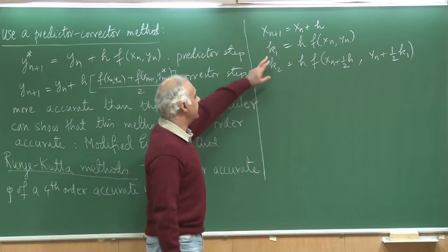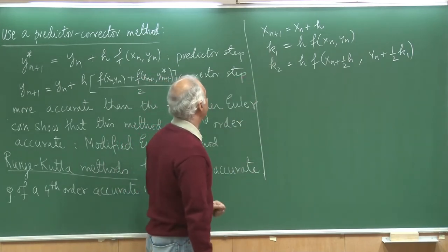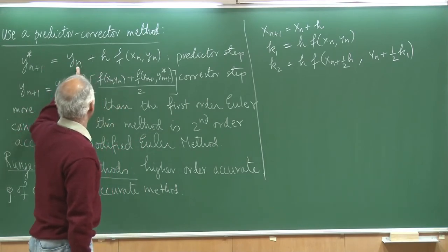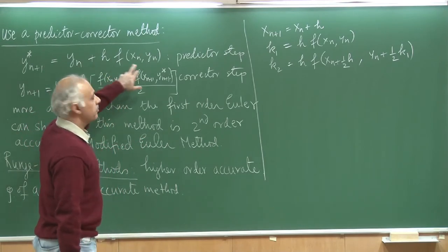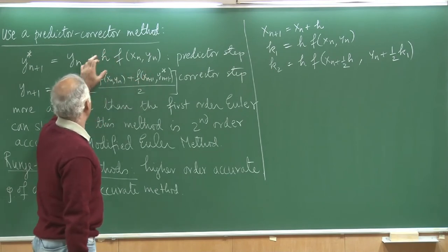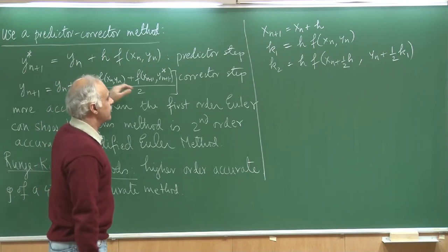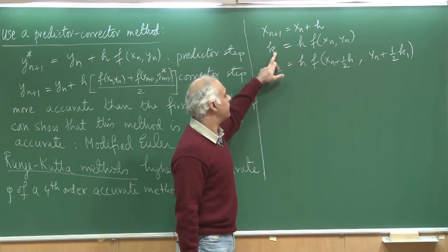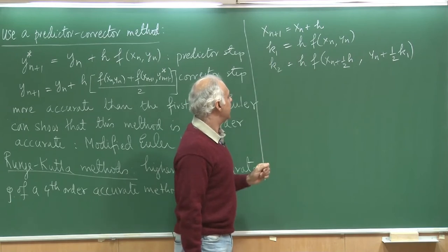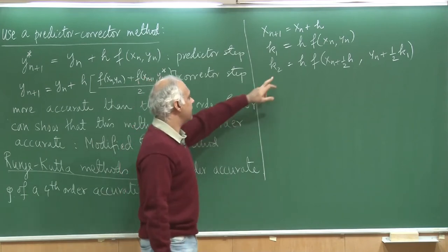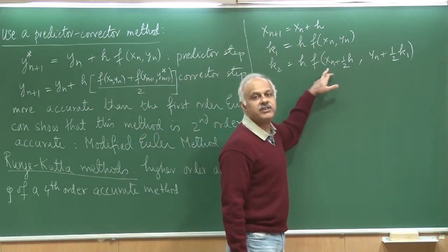You can notice k_1 is simply — if you recall, y*_{n+1} was y_n plus this term. So h times f_n is the increment to y_n that we have computed. Just like h is the increment to x, you can think of k as an increment to y. So we first estimate the increment, and then we again estimate another increment based on the slope which is halfway through.